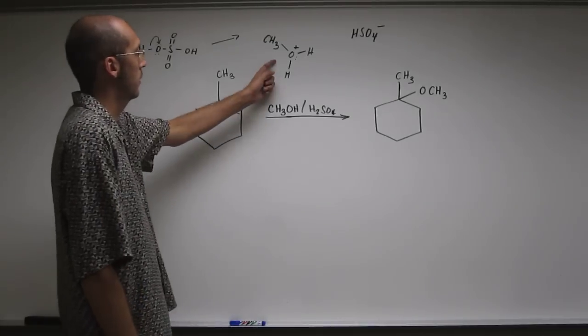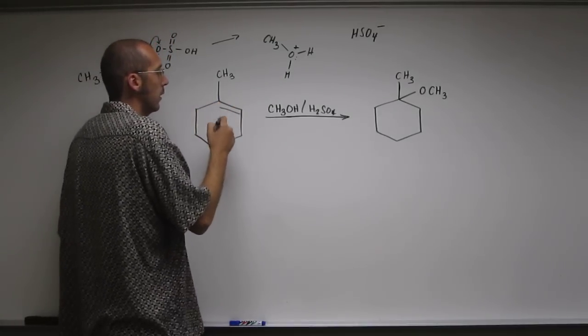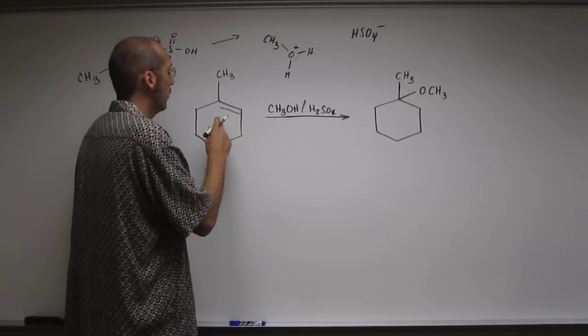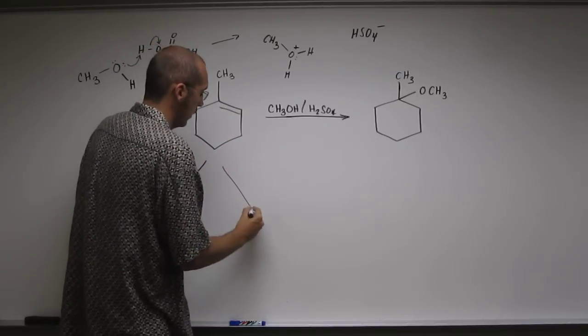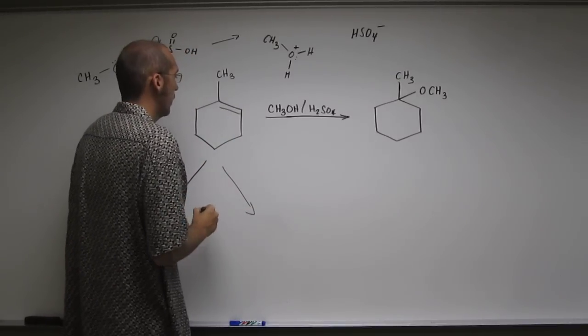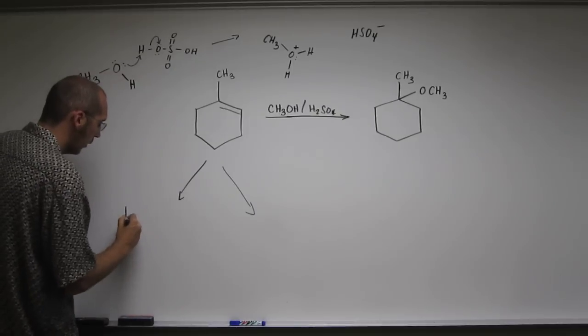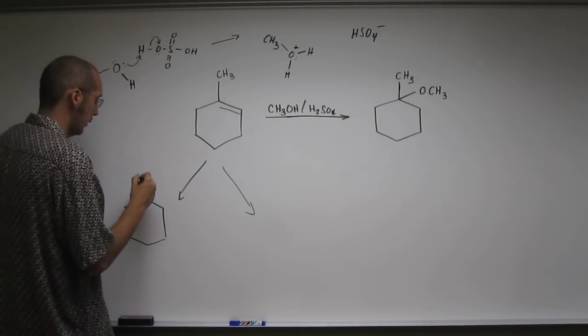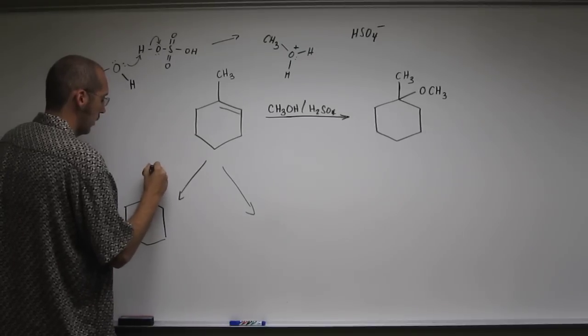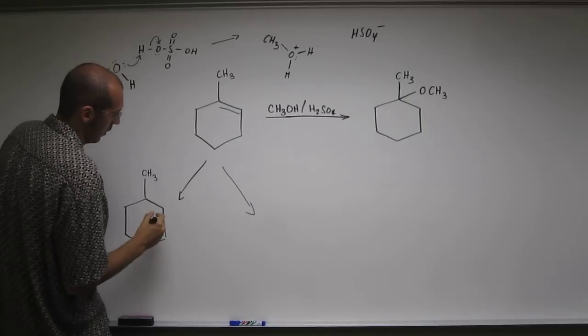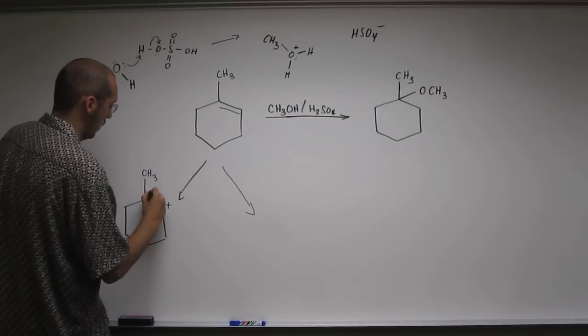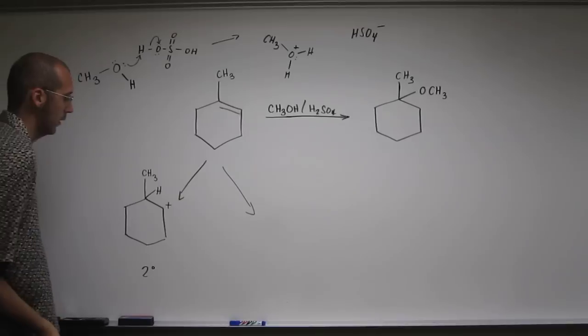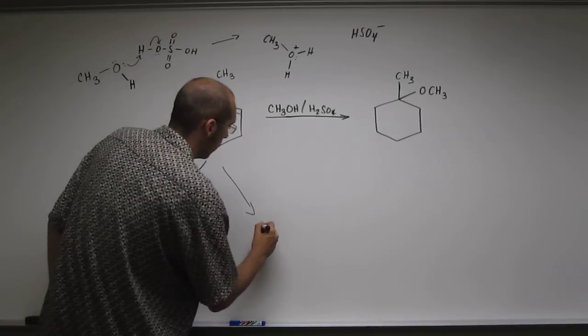So it's very acidic, so it's going to protonate this alkene. Again, we have a choice. Which alkene, or which carbocation intermediate are we going to make? Are we going to make this one, which is the secondary, or are we going to make...